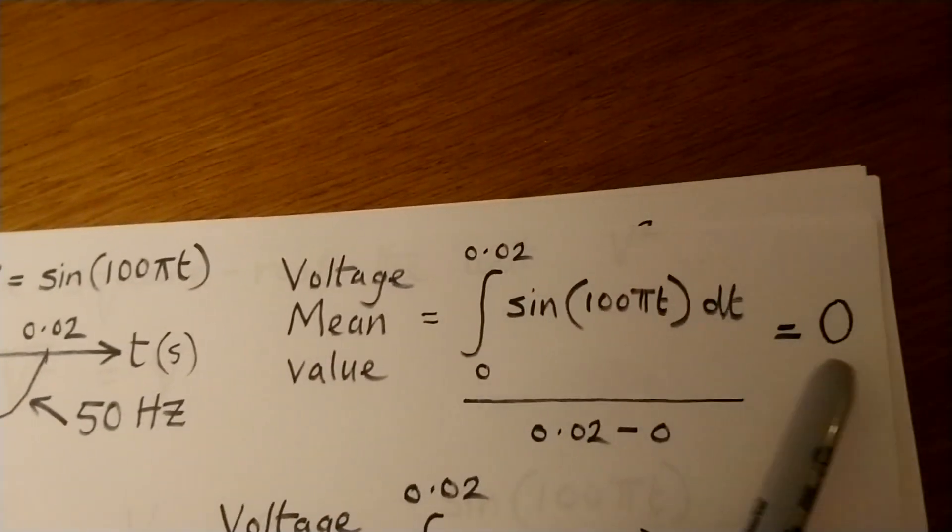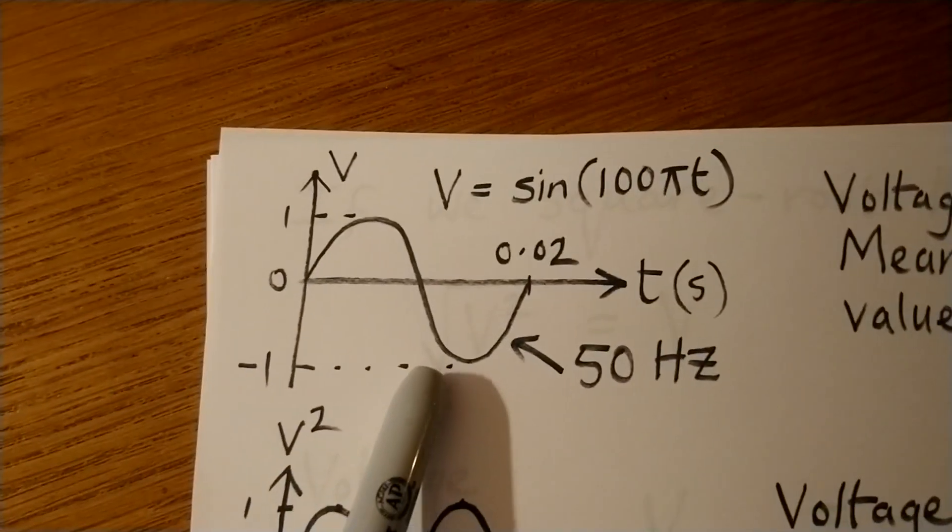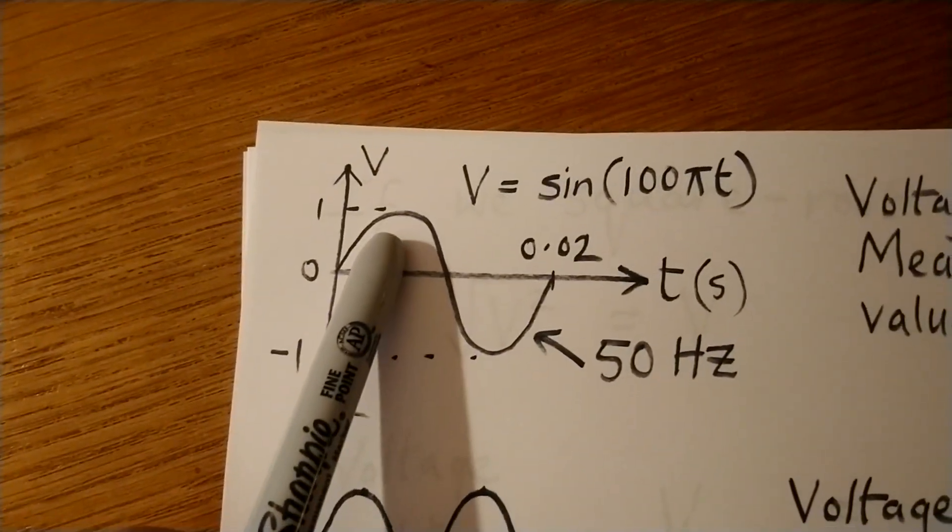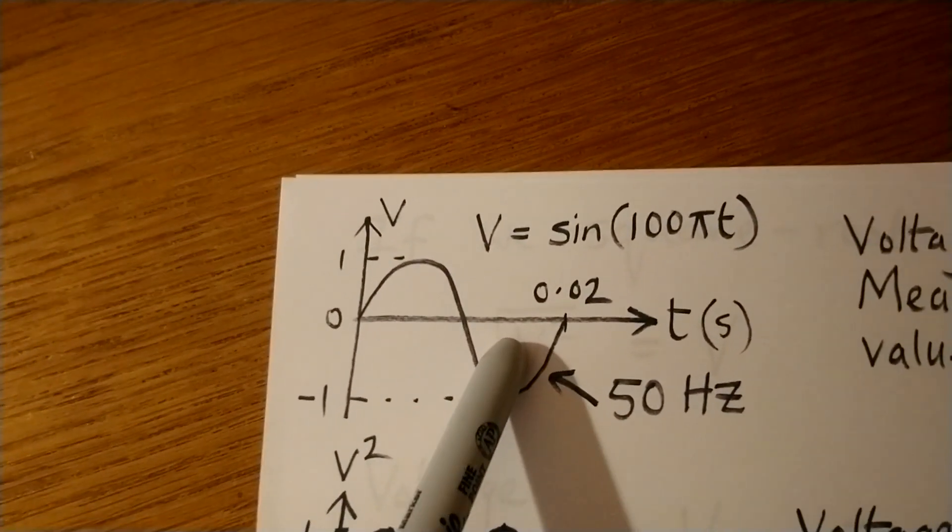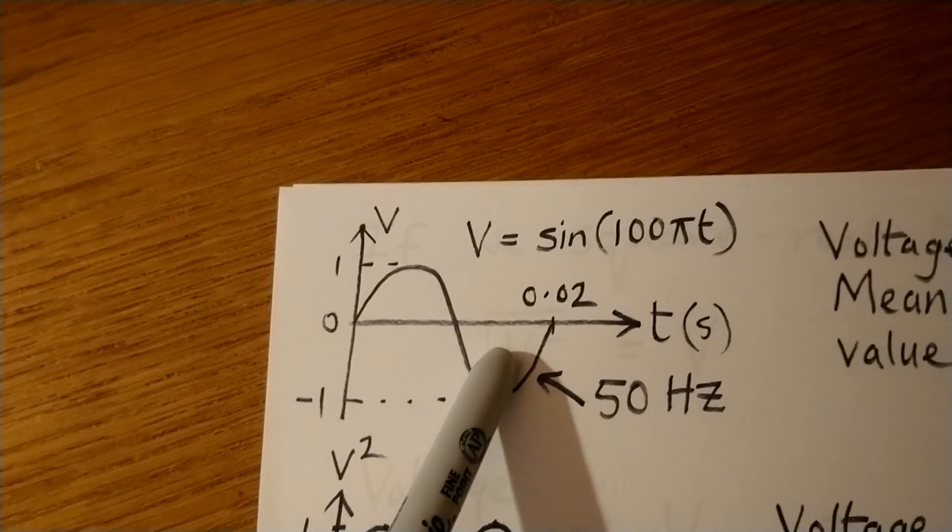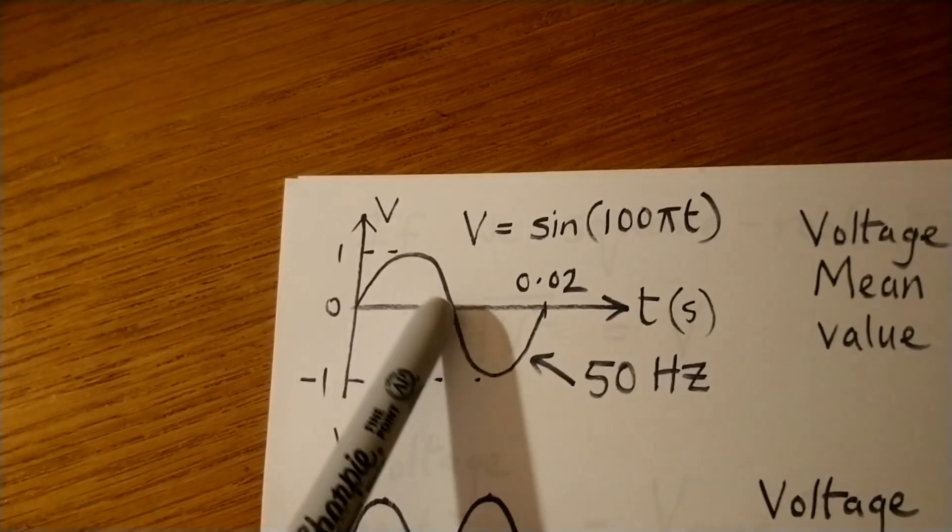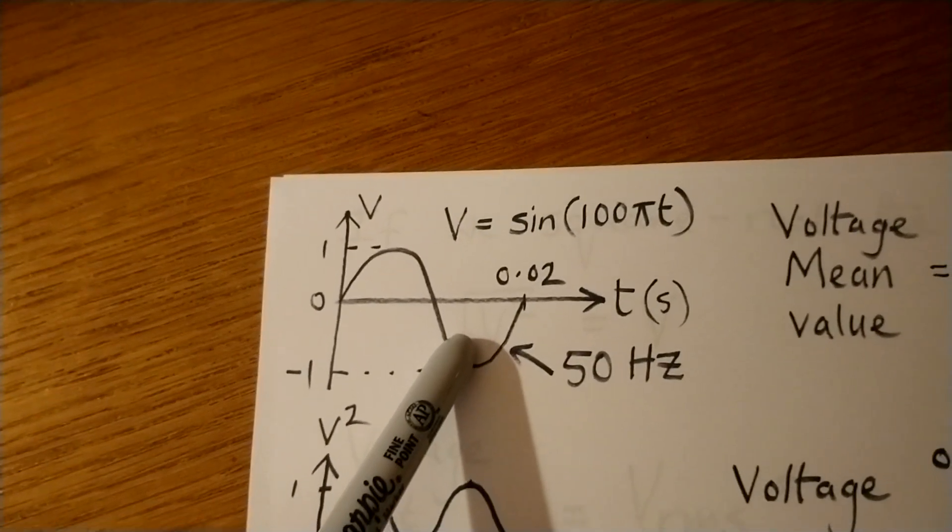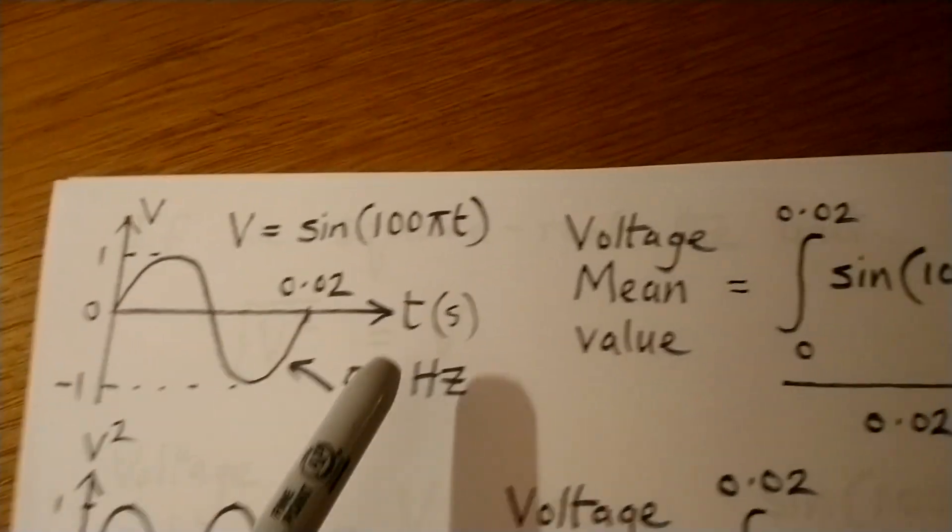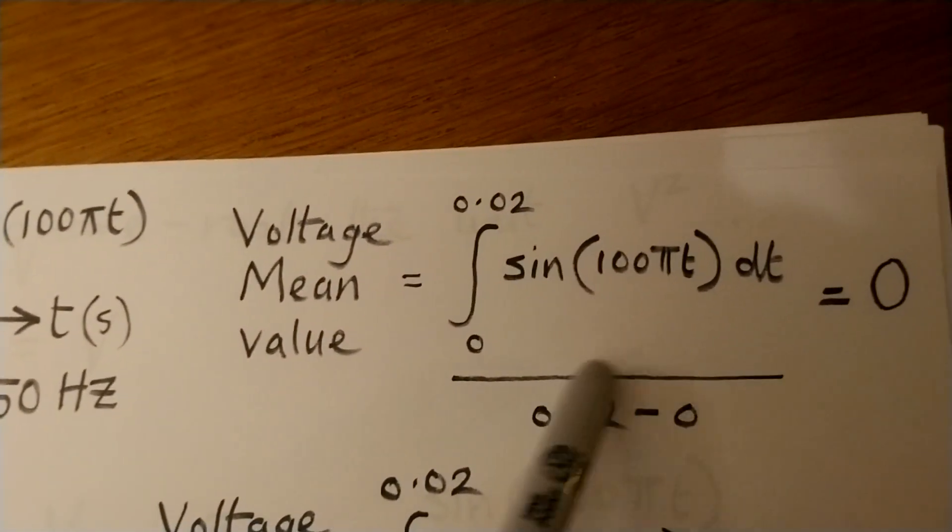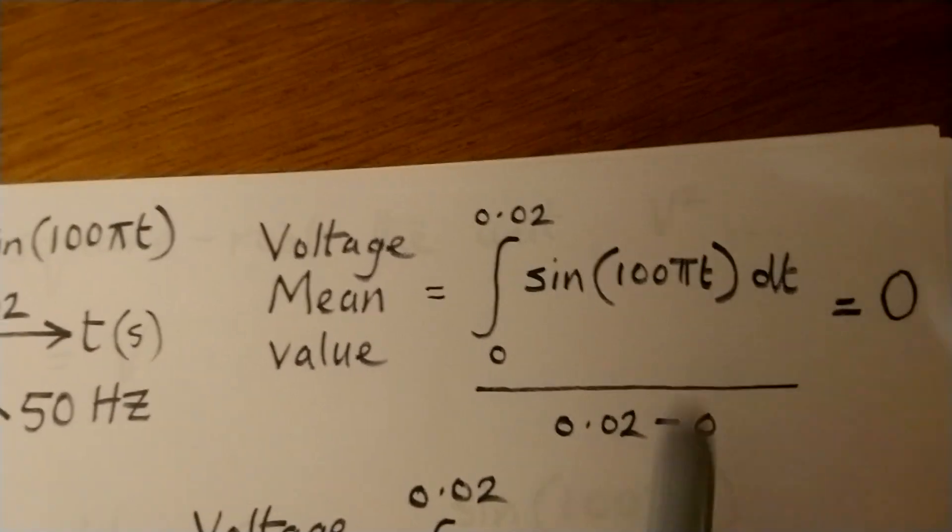Now that actually gives us an answer of zero. And if we look at the graph, we can see that by inspection. The area above the axis, which counts as positive, is equal to but opposite in sign to this area here because area below the axis counts as negative. So when we add this one to this one, we just get zero. And that will always be the case for a sinusoidal wave. So measuring the mean value and giving us an answer of zero is not much help. So how can we overcome this?